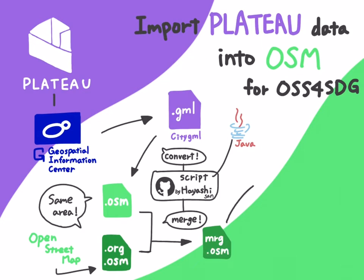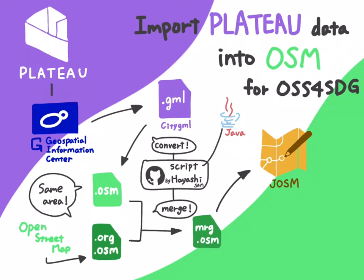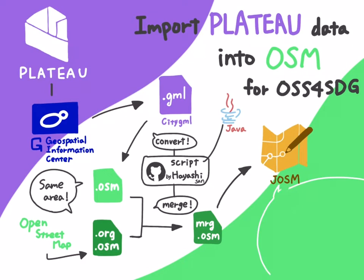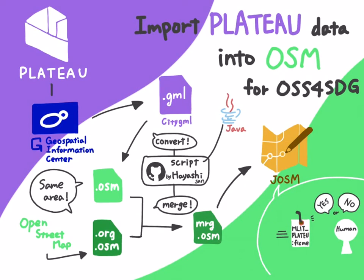Number 4. Open MRZ.OSM saved in step 3 in JOSM, and if there is an overlap between the existing OSM data and the data in the same area, click the MLIT button on the target object. The MLIT tag is assigned to the object in question. A human must check if this object should be imported and handled appropriately.